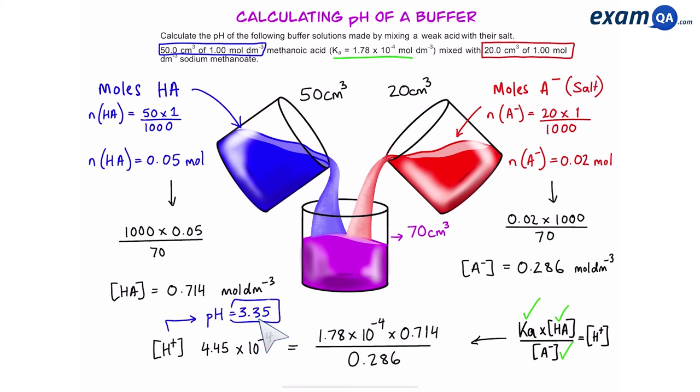So in this video we were able to work out the pH of a buffer using a weak acid and its salt. In the next video we're going to look at how to make a buffer using a weak acid and a strong base.